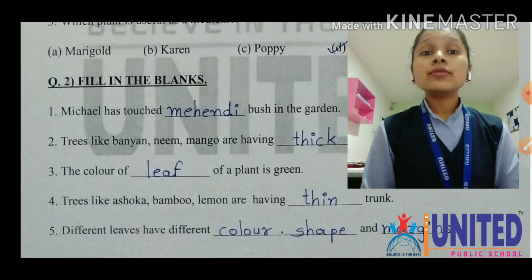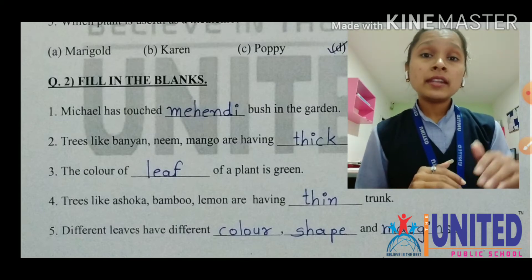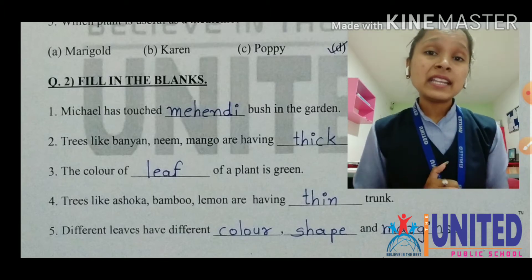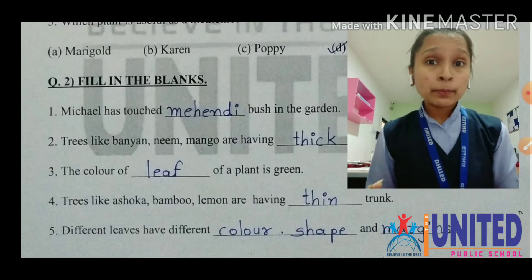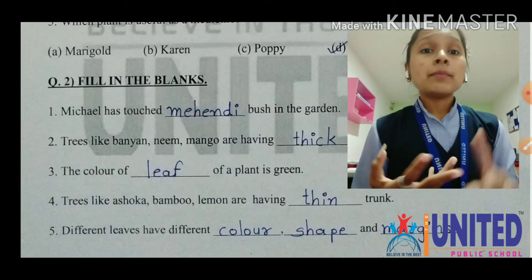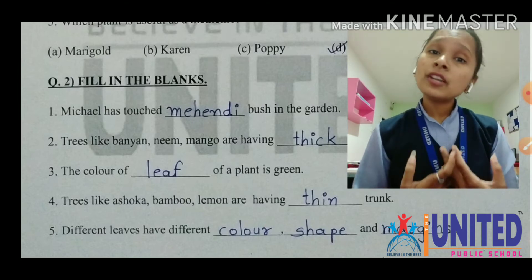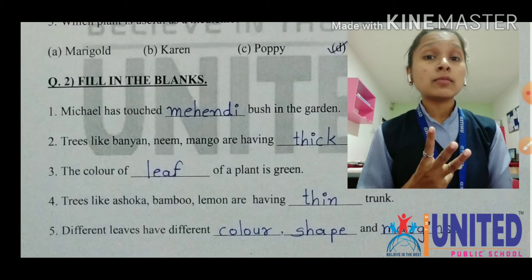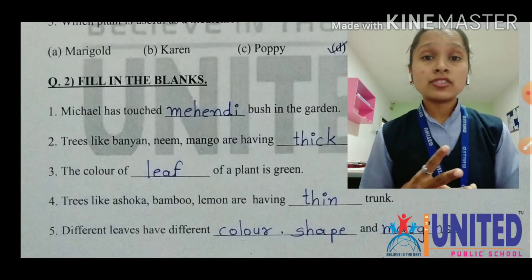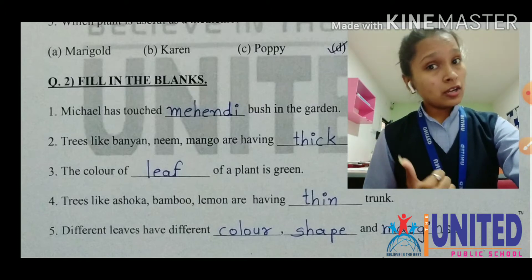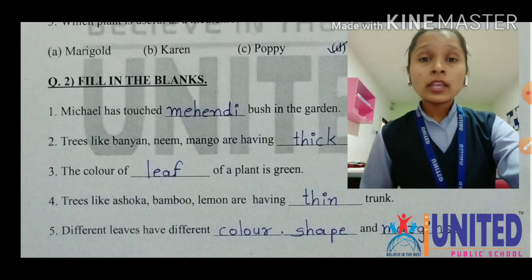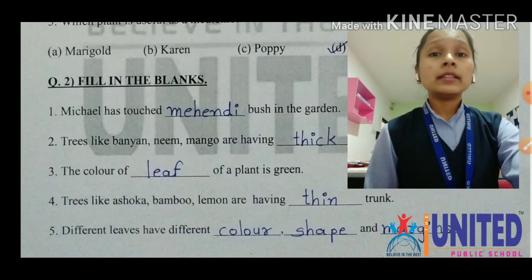Number five: different leaves have different dash, dash and dash. Ma'am explained in the zoom meeting that different leaves have different colors — some are light green, some are dark green, some are yellow, some have white patches. And different shapes — neem, banyan, mango leaves all have different shapes. And margins — there are three types: straight margin, uneven margin, and so-so kind of margin. So different leaves have different color, shape, and margins. Question number two, filling the blanks, is completed.